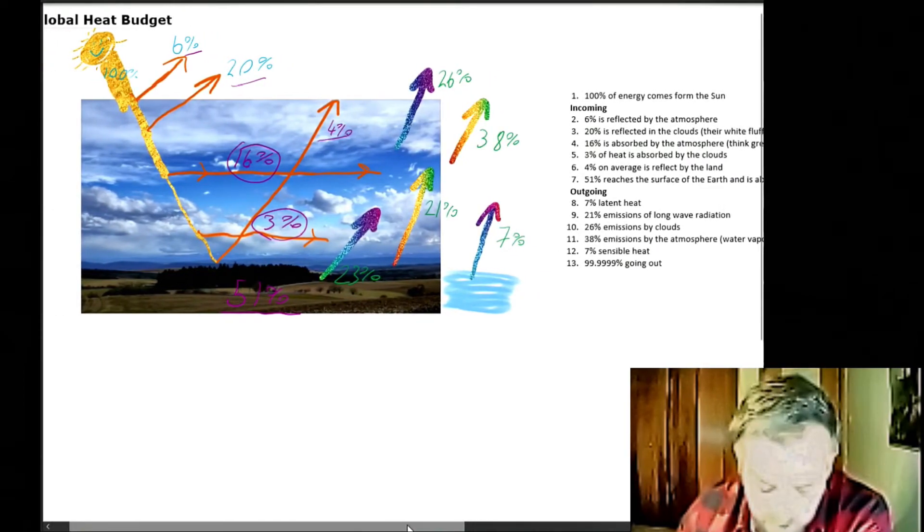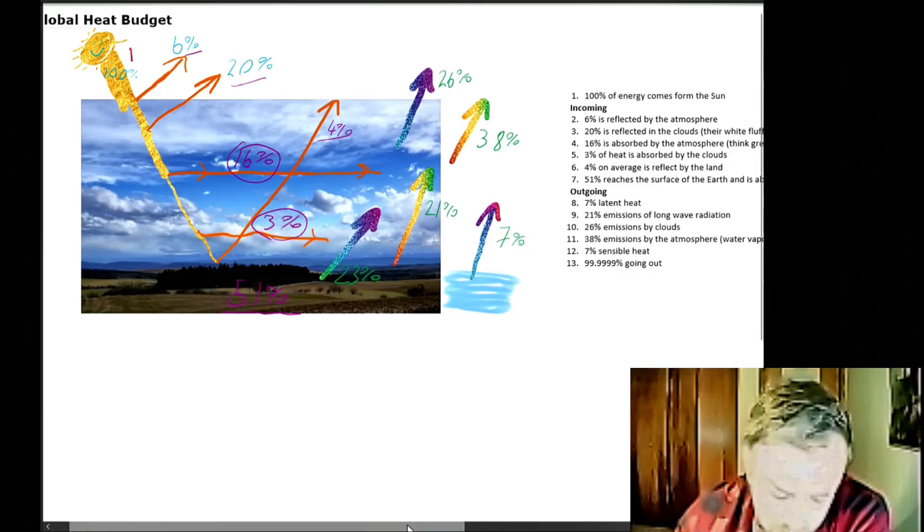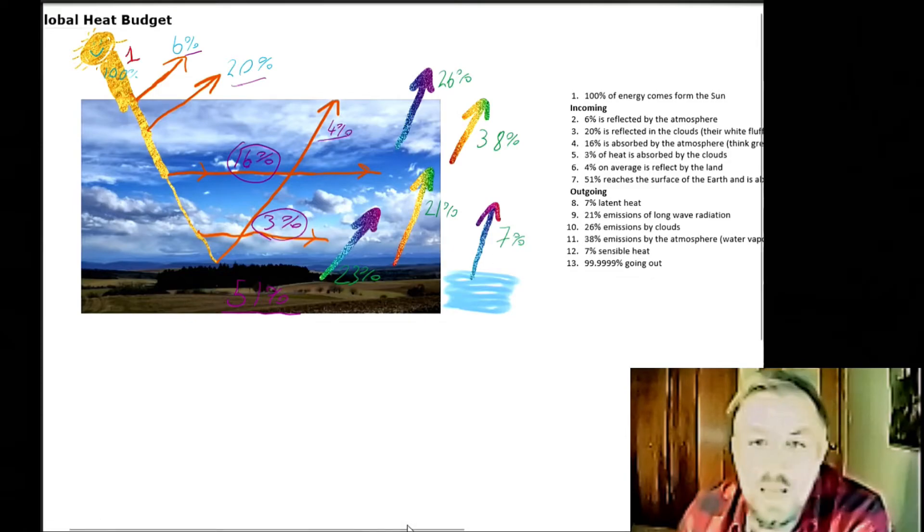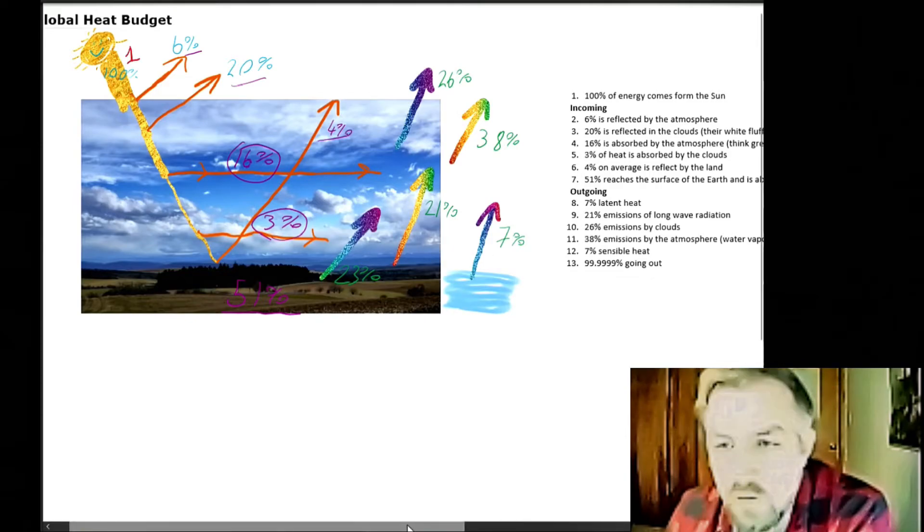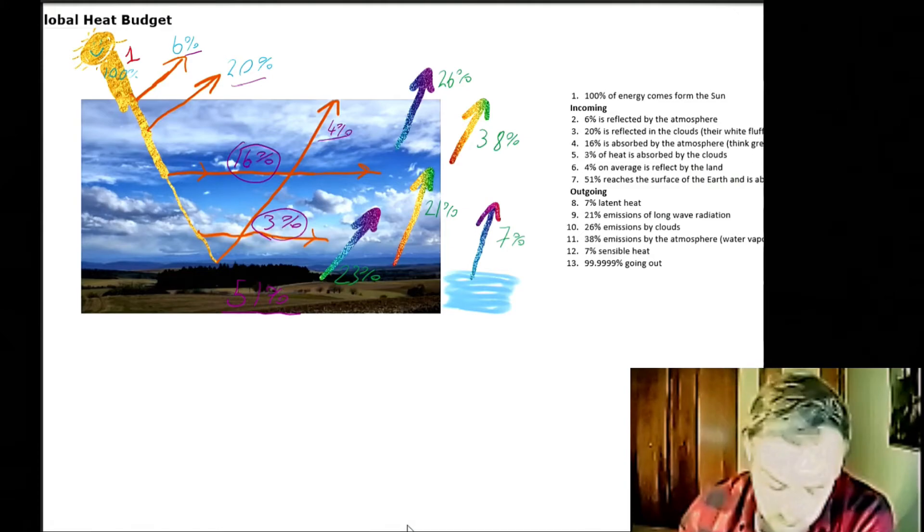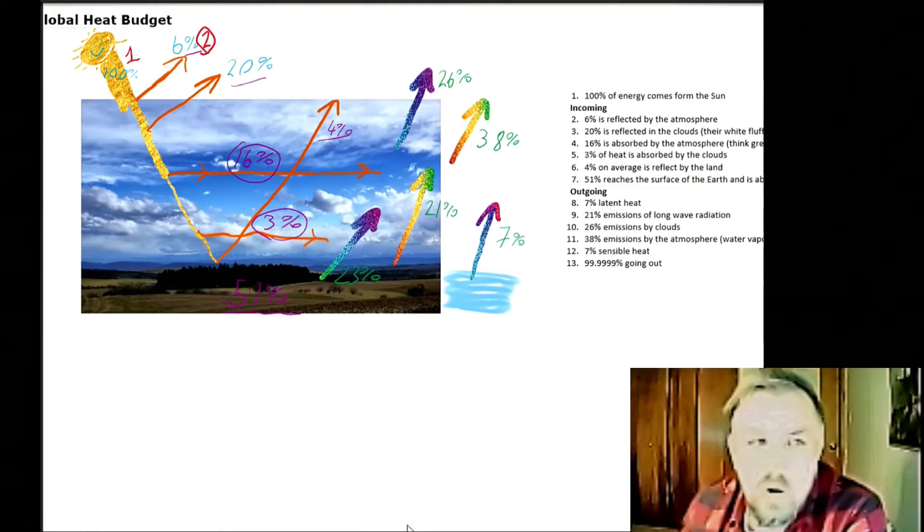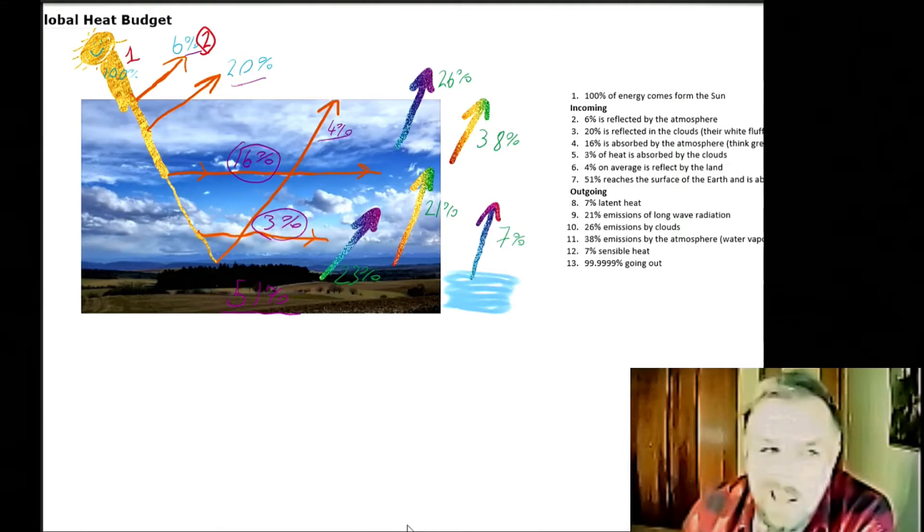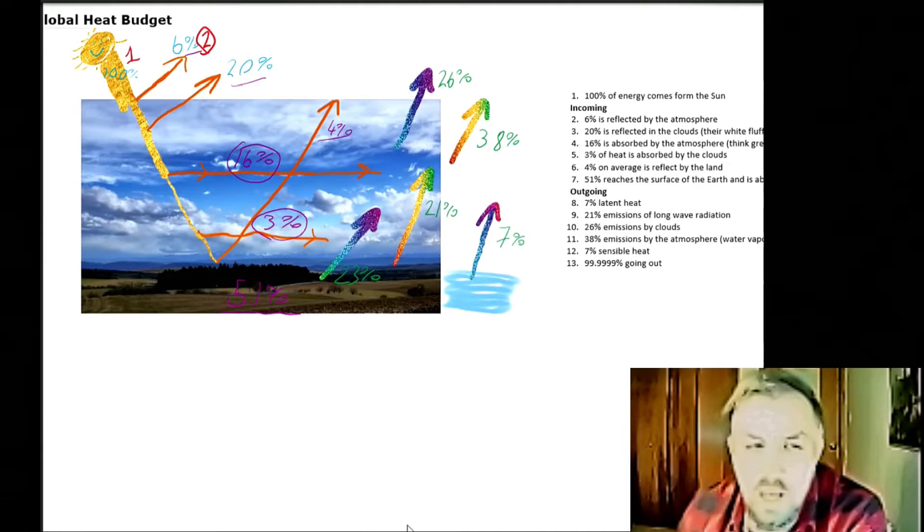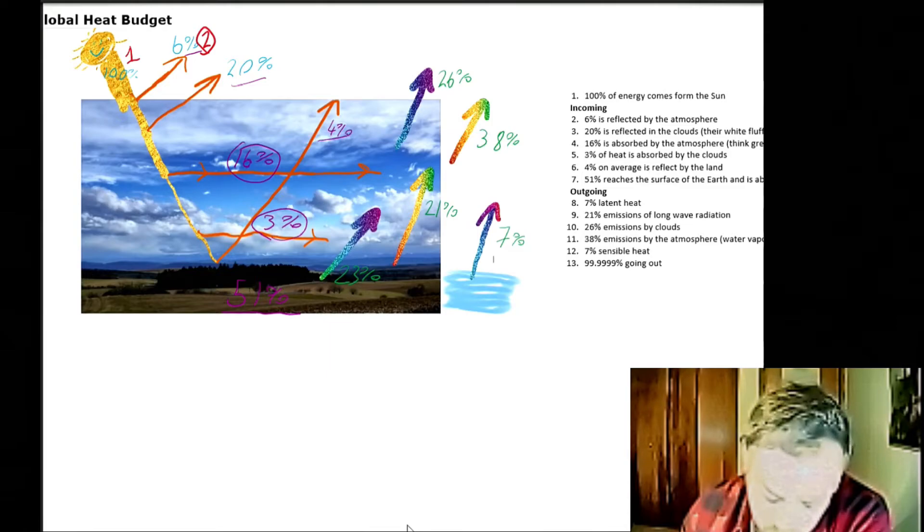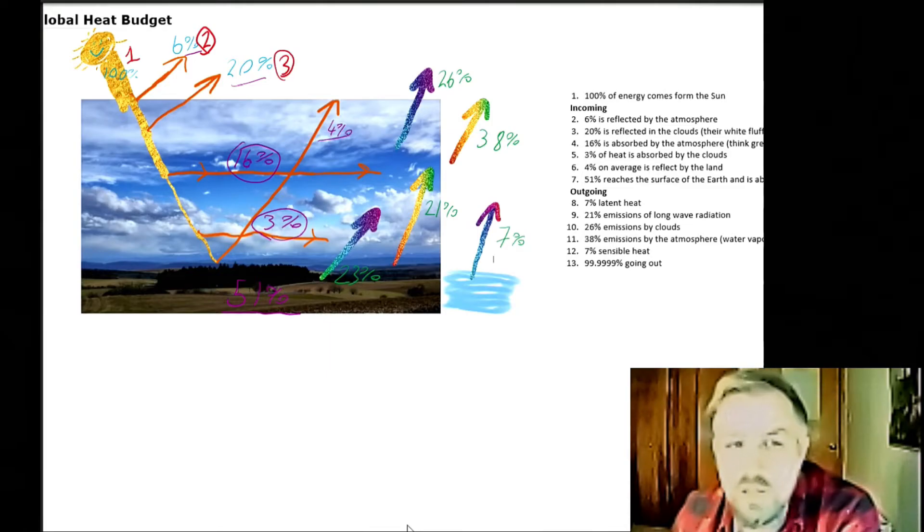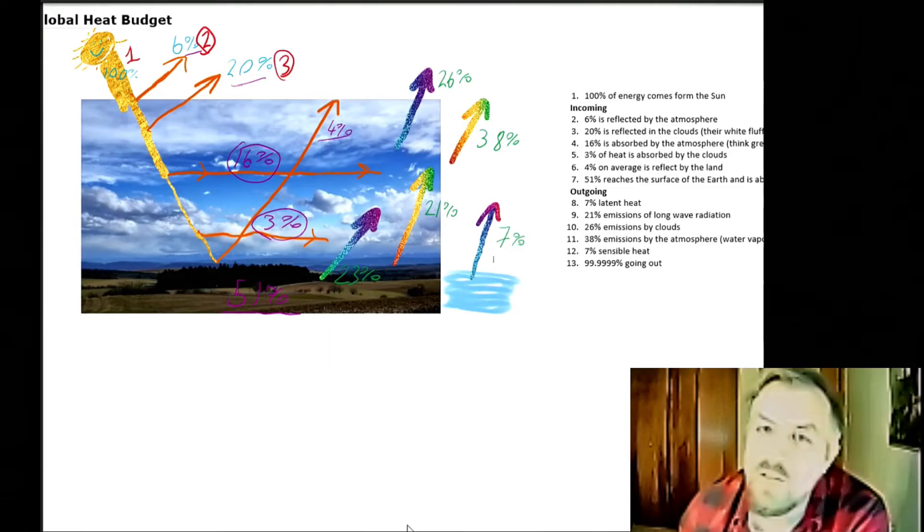Number two is 6% of our heat energy is reflected by things in the atmosphere, like dust particles and gas particles. Then we have number three - 20% is reflected by the white fluffiness of those clouds back into the atmosphere.